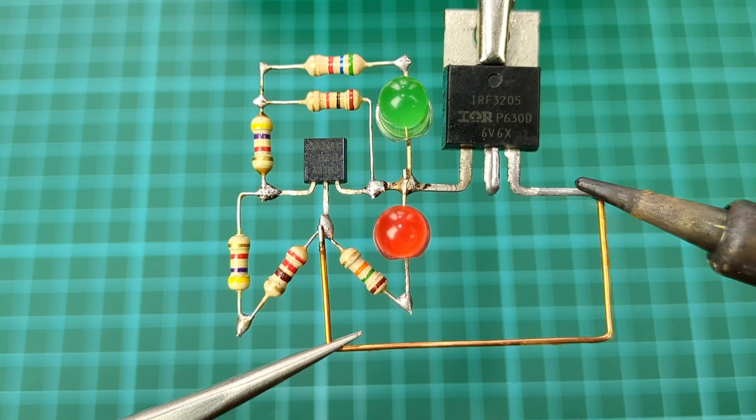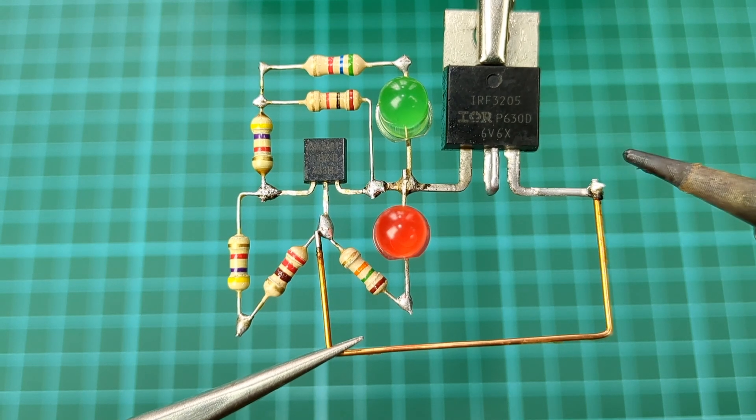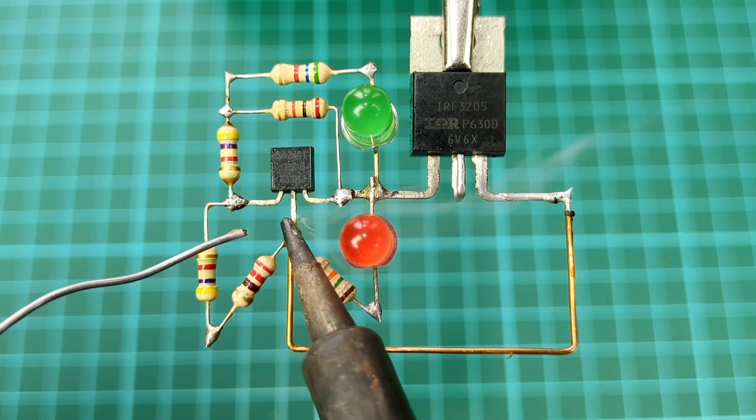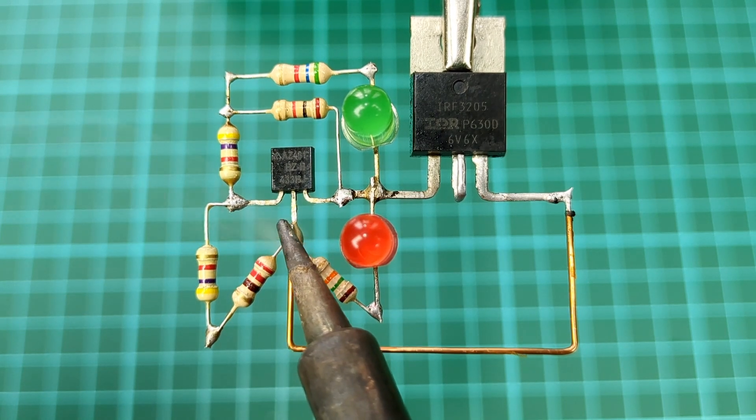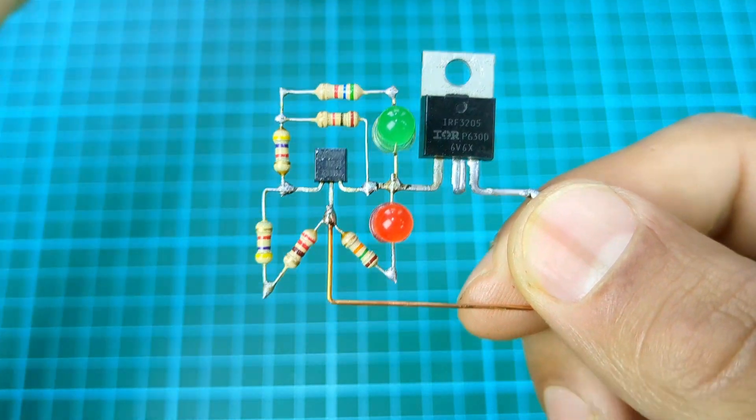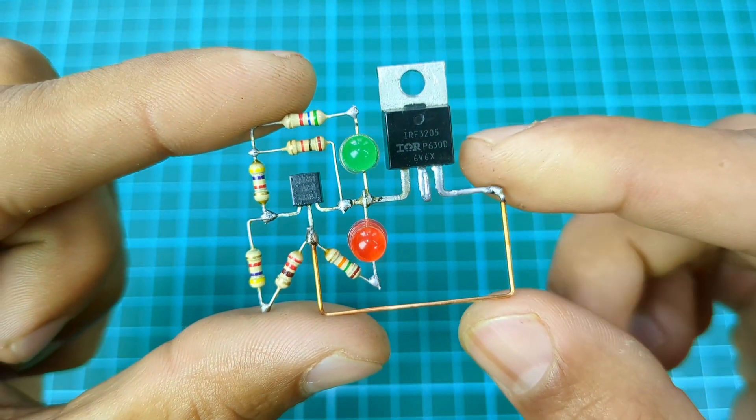Connect a jumper wire from source pin of MOSFET to the second pin of shunt regulator. Now the circuit is completed, it looks very nice.